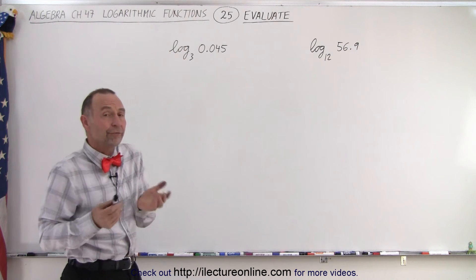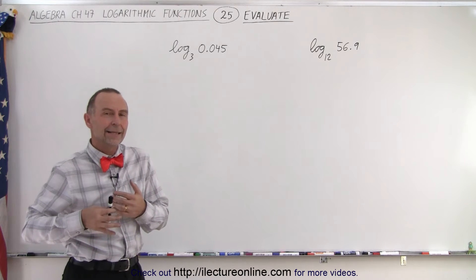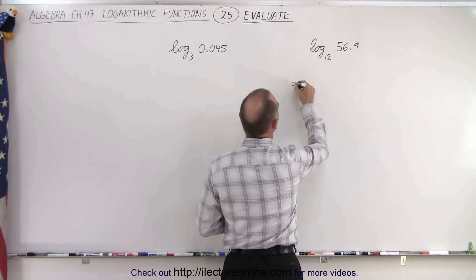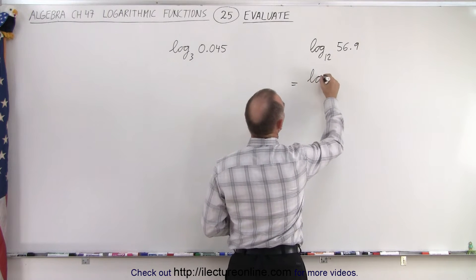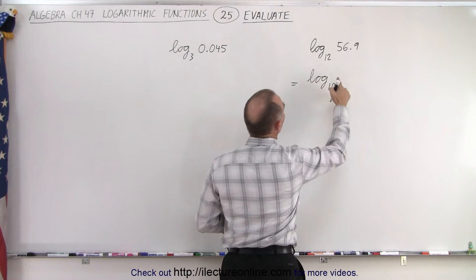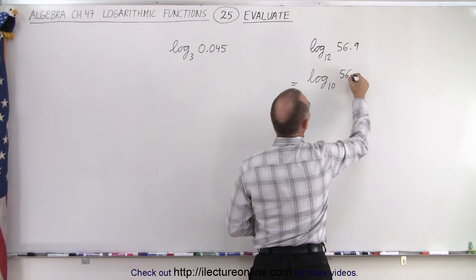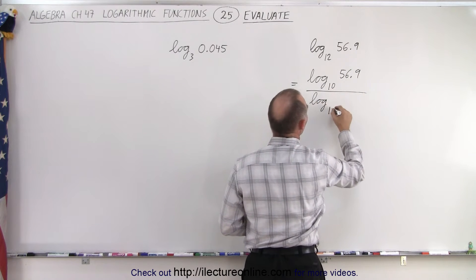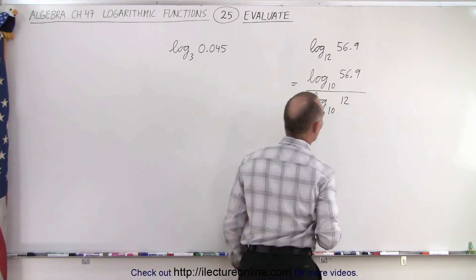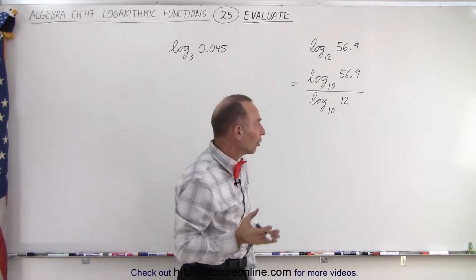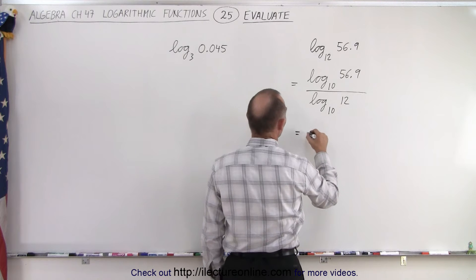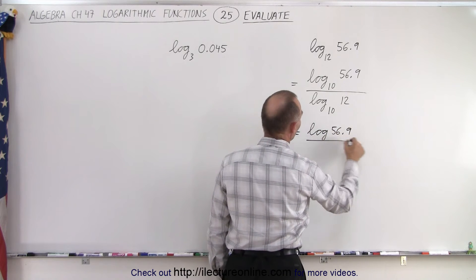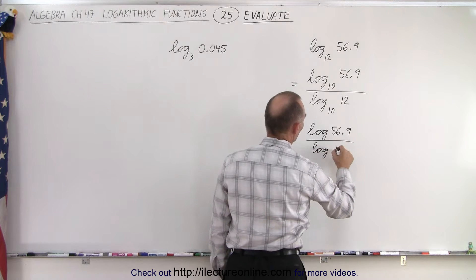So let's first convert it, perhaps, to not the natural log — how about the common log? That would be a good conversion. So this can now be written as the log base 10 of 56.9 divided by the log base 10 of the old base, 12. Of course, we didn't have to write the log base 10 — we can simply write this as the log of 56.9 divided by the log of 12.